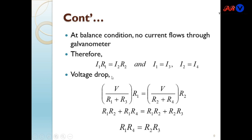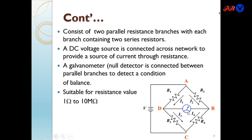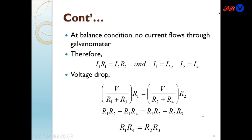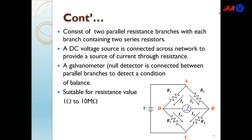Using the voltage divider rule, the voltage drop across R1 equals V·R1/(R1 + R3), and similarly the voltage drop across R2 equals V·R2/(R2 + R4). After calculation, the condition for balancing the bridge is that R1·R4 must equal R2·R3 — that is, the product of opposite arms must equal the product of the other opposite arms of the Wheatstone bridge.